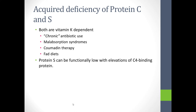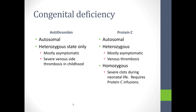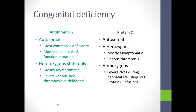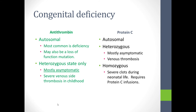Also, malabsorption syndromes, coumadin therapy, drugs that directly inhibit vitamin K, and fad diets affecting vitamin intake can all cause acquired deficiency. Protein S can also be functionally low due to elevation of C4 binding protein. The congenital deficiency of antithrombin and protein C are larger problems.